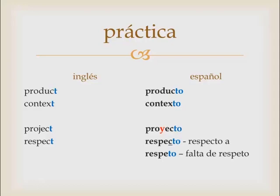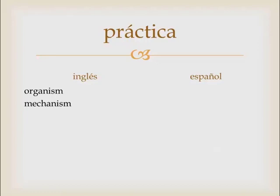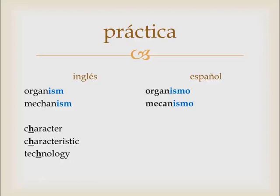When you're talking about something 'in regard to' or 'in respect to' something, you'll keep the C. Now: organism and mechanism — take a second and jot those down. Because the words end in I-S-M, in Spanish it's going to be 'organismo' and 'mecanismo.' Notice they drop the H in mechanism. You've seen this before in words like character, characteristic, and technology — in Spanish: 'carácter,' 'característica,' 'tecnología.' Add 'mecanismo' to that list as well.